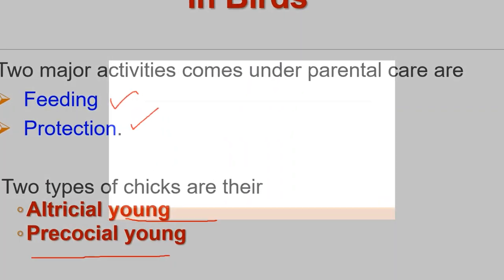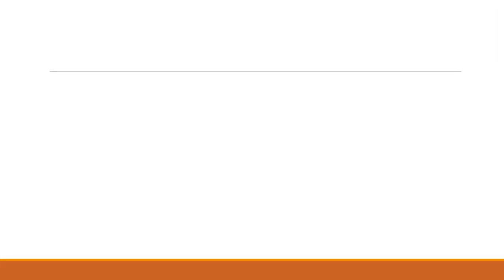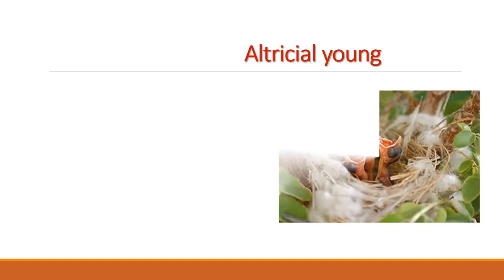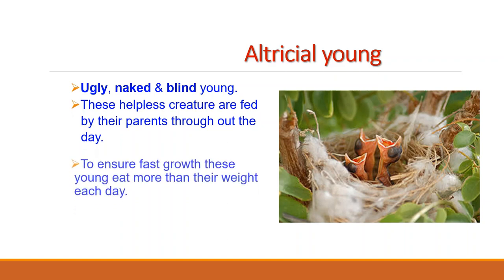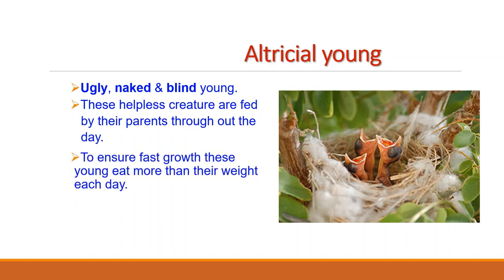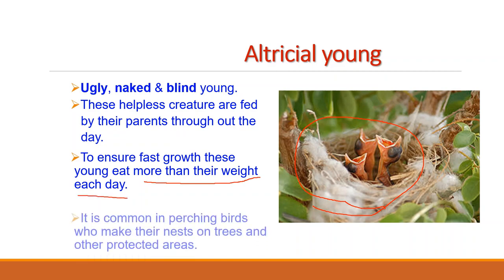Many species of birds hatch ugly, naked and blind young. These helpless creatures are commonly called altricial young. This is typical of most perching birds whose nests are built on trees and other protected places. To ensure fast growth and quick exit from the nest, altricial young ones eat more than their weight each day and their parents must carry food almost constantly throughout the day. Therefore, parental care is more prominent in birds producing altricial young.